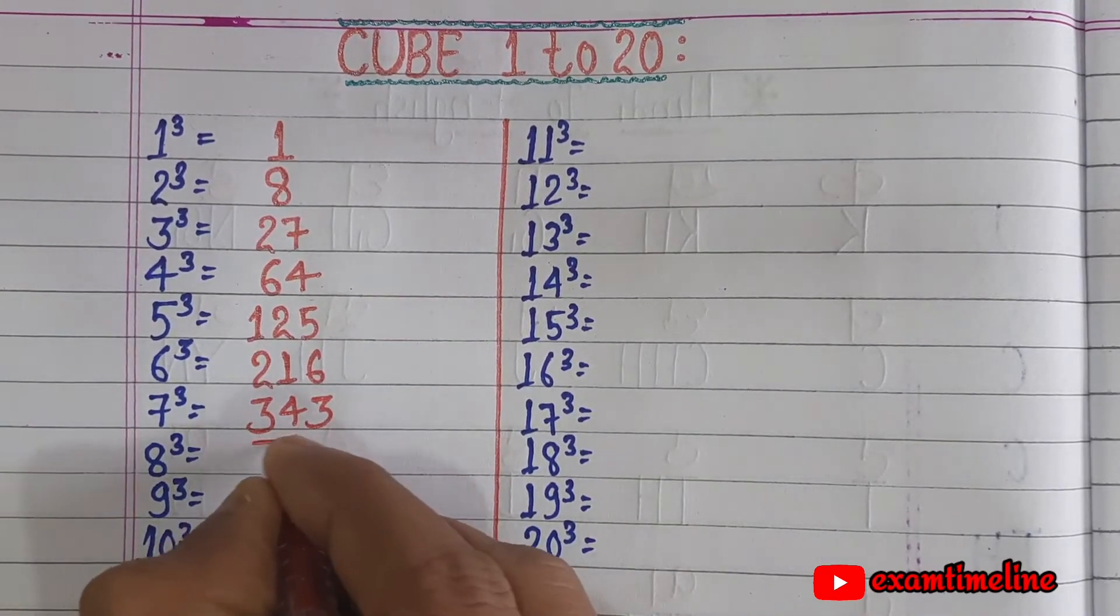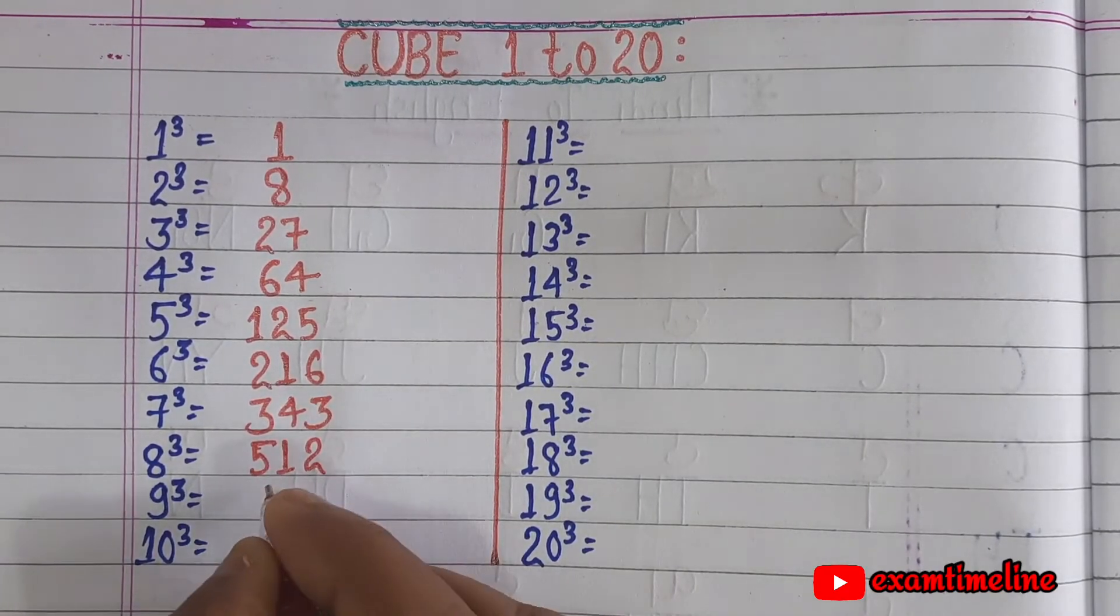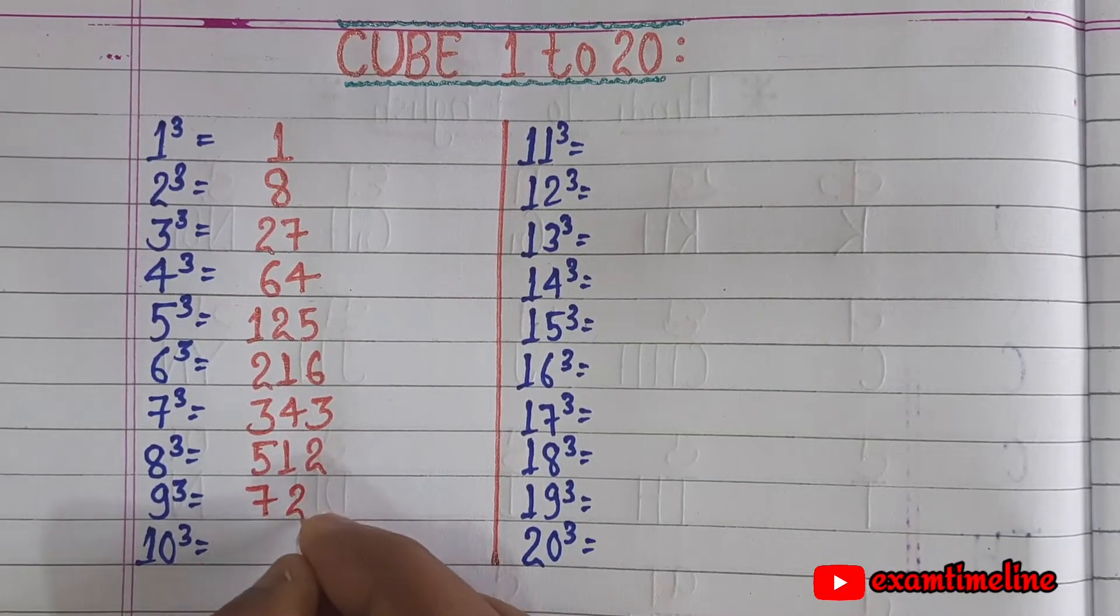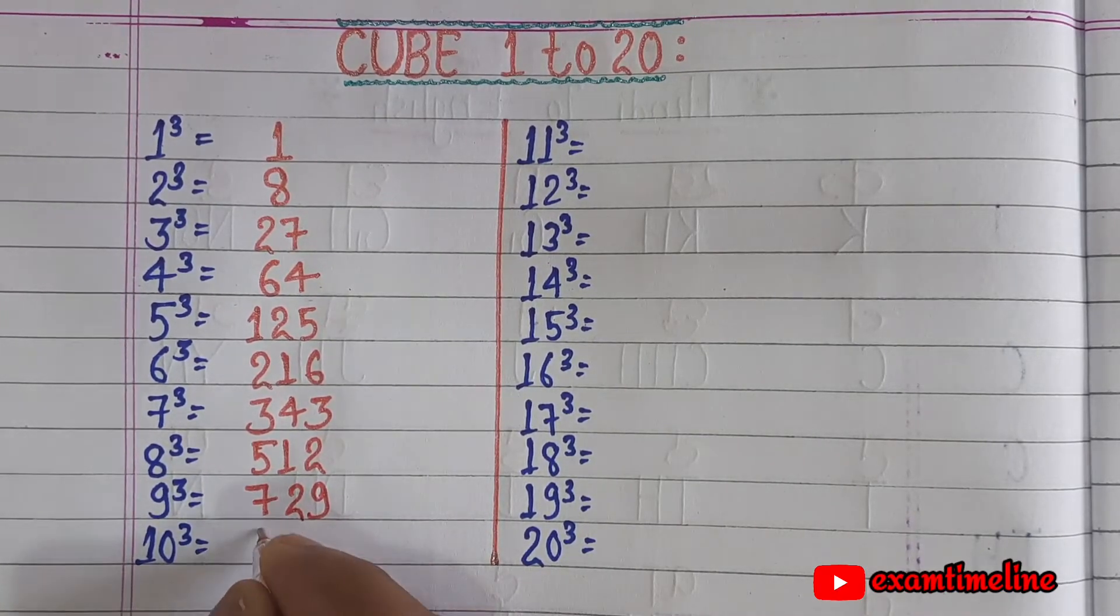8 cube equals 512, 9 cube equals 729, 10 cube equals 1000.